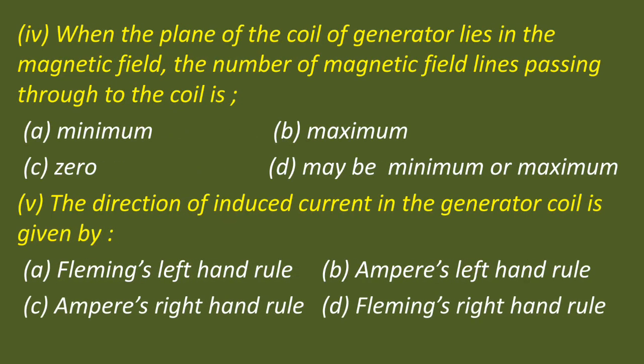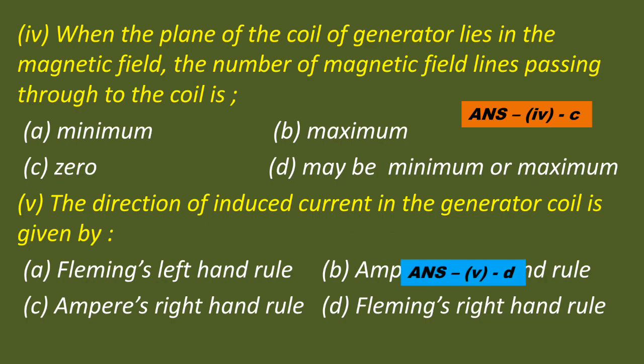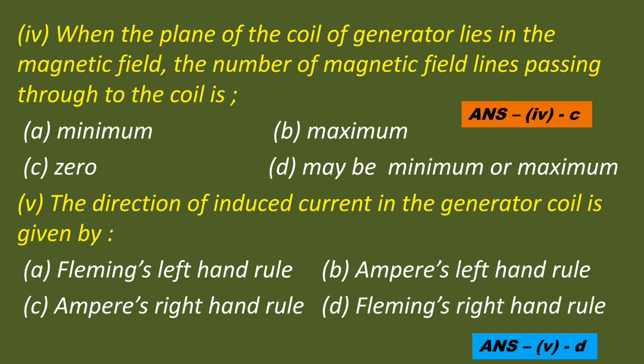Question 4: When the plane of the coil of the generator lies in the magnetic field, the number of magnetic field lines passing through the coil is — Option A: minimum, Option B: maximum, Option C: zero, Option D: may be minimum or maximum. The correct answer is C — zero. Question 5: The direction of induced current in the generator coil is given by — Fleming's left hand rule, Ampere's left hand rule, Ampere's right hand rule, or Fleming's right hand rule. The correct answer is Option D — Fleming's right hand rule.